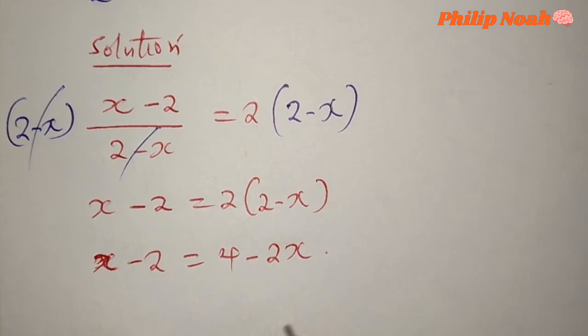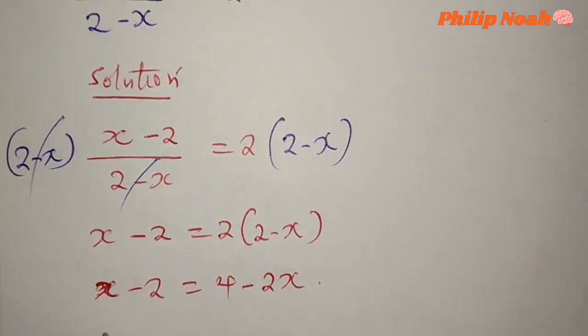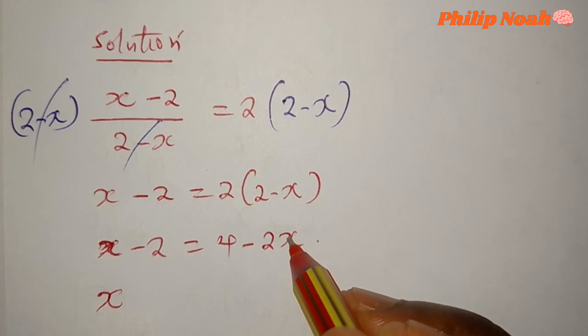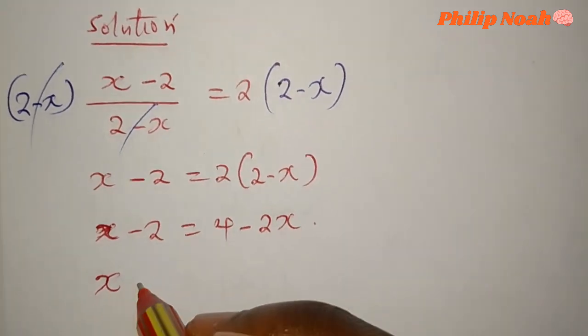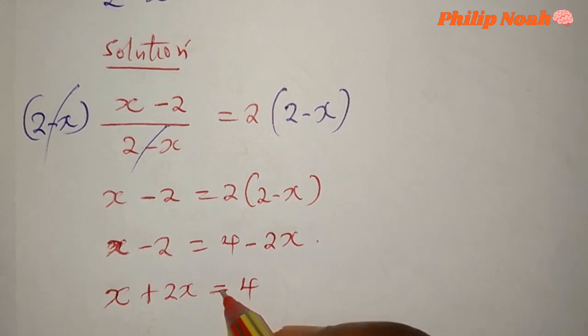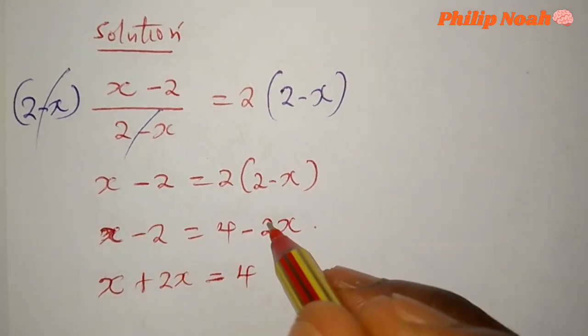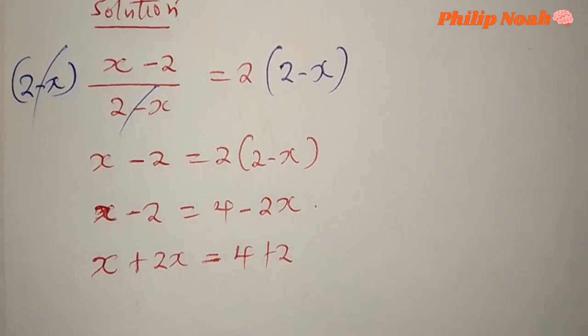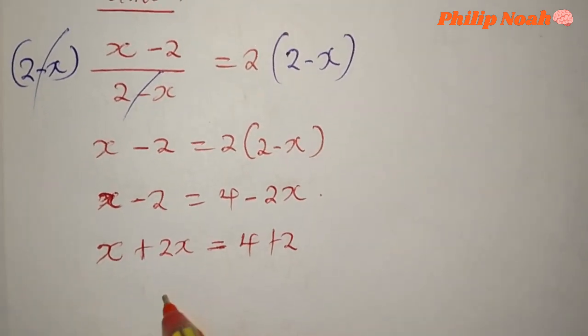So you have x, this is negative 2x. If it crosses the equal sign it becomes positive, so plus 2x equals 4. We'll bring it to the other side, so this negative 2 will be positive 2 over there.